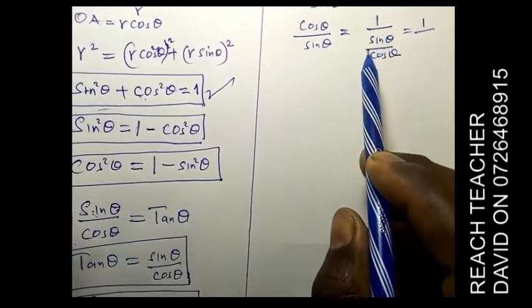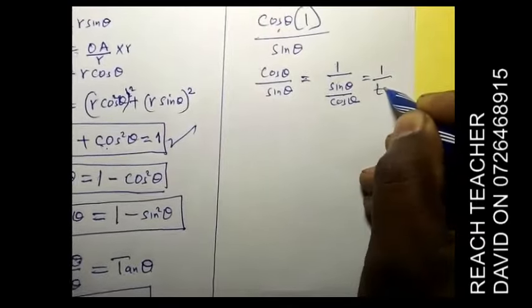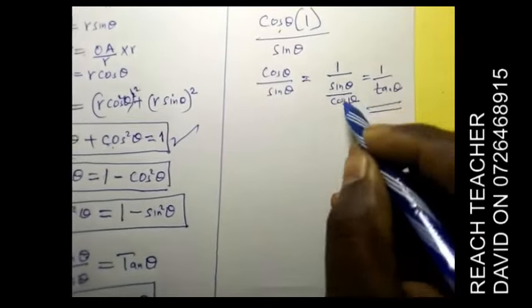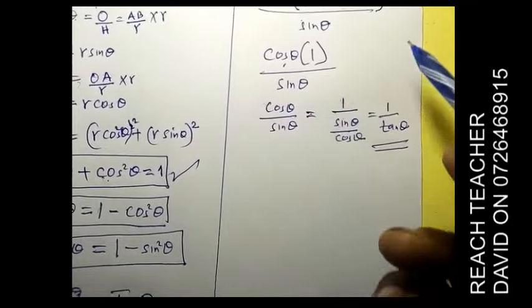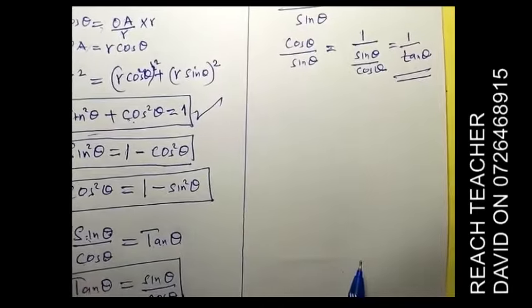Therefore, 1 over sine theta over cos theta, the answer is 1 over tan theta. Hence, you have shown that this one equals this. Another good example, example 2. So before I go to example 2...